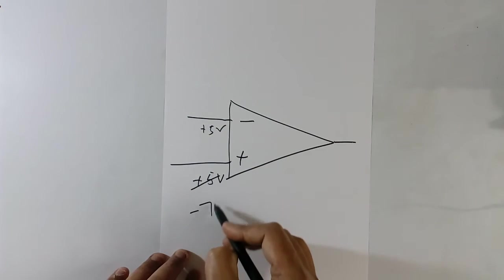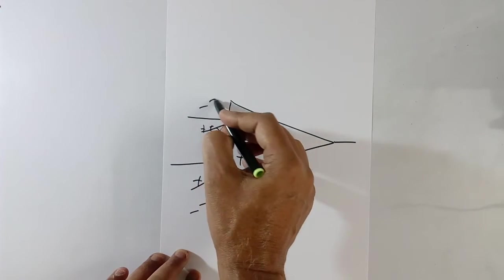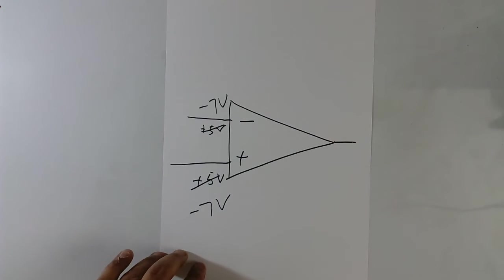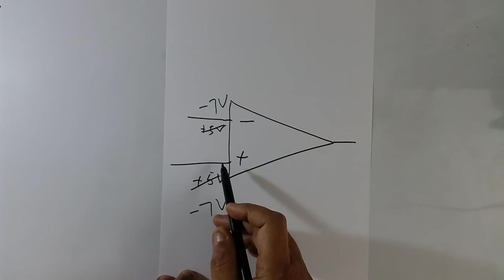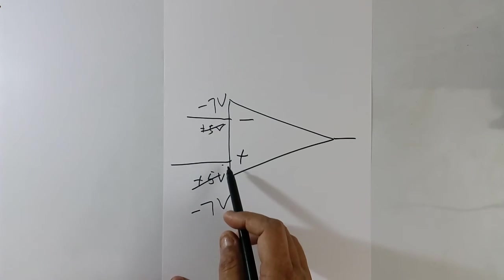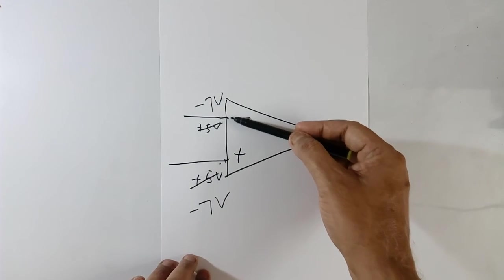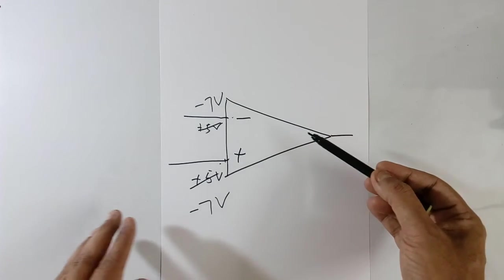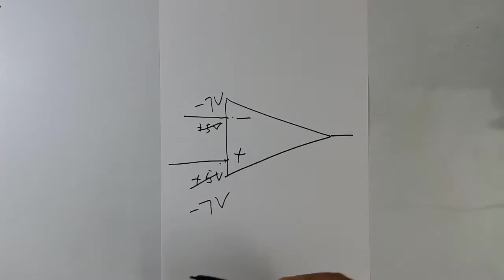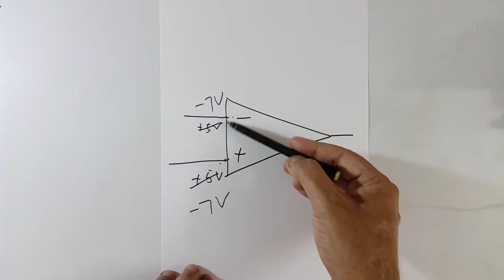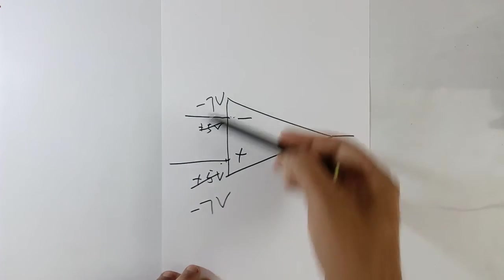You are free to give any voltage within linear range to plus terminal, but not negative terminal. Negative terminal follows the positive terminal, as long as IC is in linear range. If IC is not in linear range, this voltage will not follow this. Both will be different. I will show some examples.